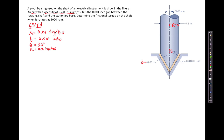Moving to the last sentence, we need to determine the frictional torque on the shaft when it rotates at 5,000 RPM. So we're given omega = 5,000 revolutions per minute, and we're asked to find the net torque T — the resistance to spinning the shaft about its axis.